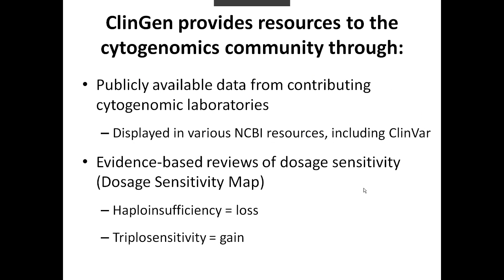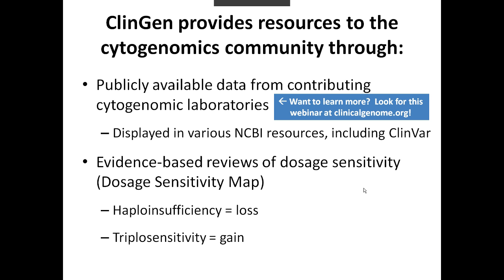Specifically for the cytogenomic community, ClinGen provides the following resources. We have publicly available data from contributing cytogenomic laboratories, which is displayed in various NCBI resources, including ClinVar. That will be the subject of a separate webinar, and you can look for it on clinicalgenome.org. We also provide evidence-based reviews of dosage sensitivity. By dosage sensitivity, we are referring specifically to haploinsufficiency and triplosensitivity. By haploinsufficiency, we mean if this gene or genomic region was lost or deleted, would it result in a particular phenotype? And by triplosensitivity, we mean if there were an extra copy of this gene or genomic region, would it result in a specific phenotype? This will be the subject of our webinar today.